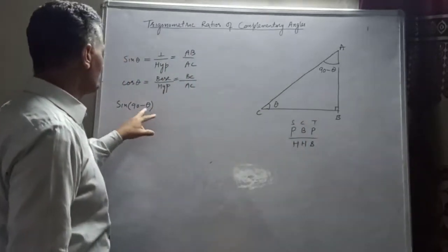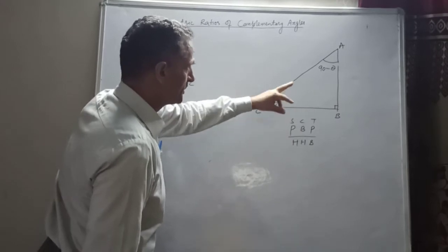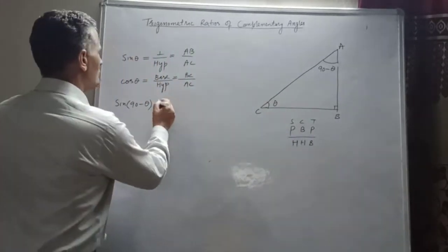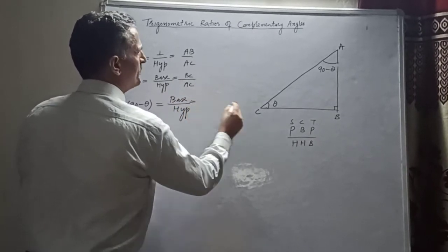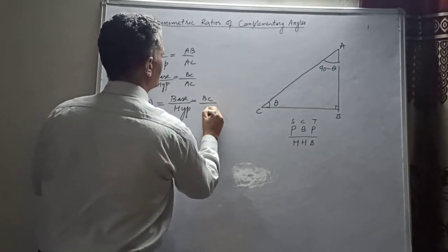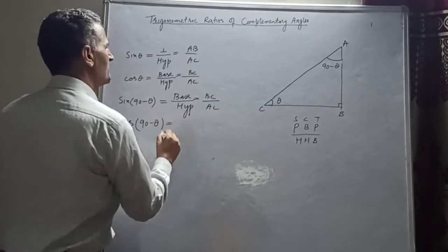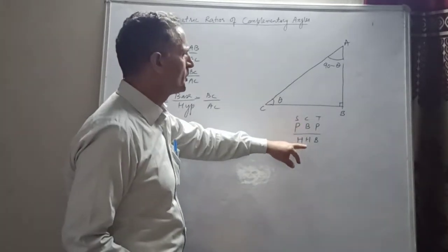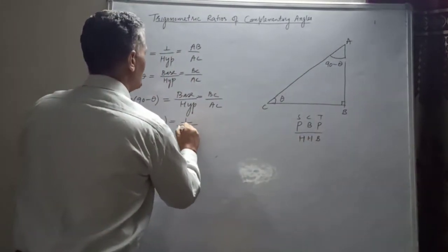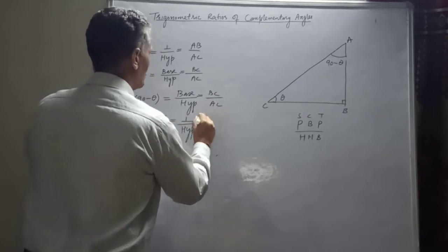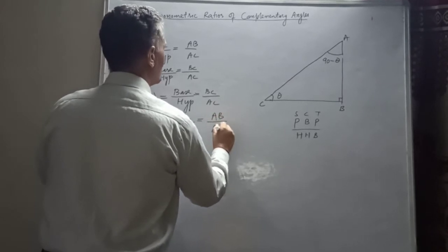So sine of (90 minus theta): since it is the vertical angle, it is base upon hypotenuse. Base is BC, hypotenuse is AC, so sine of (90 minus theta) equals BC over AC. Now, cos of (90 minus theta): for the vertical angle, cosine is perpendicular upon hypotenuse, so it equals AB upon AC.